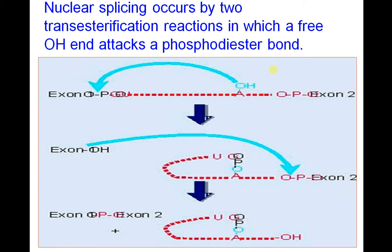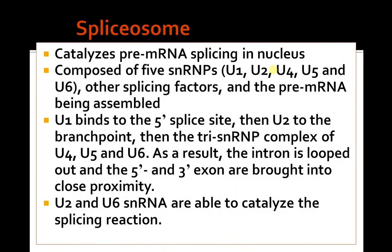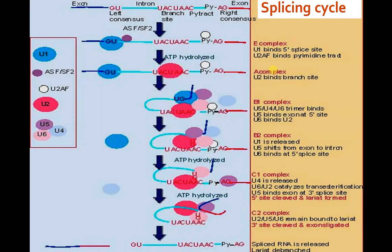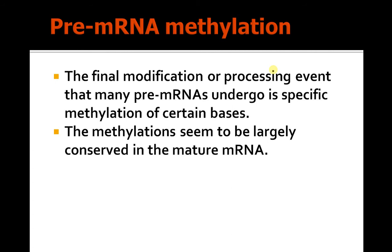Nuclear splicing involves two transesterification reactions in which free hydroxyl ends attack phosphodiester bonds. Spliceosomes catalyze pre-mRNA splicing in the nucleus and are composed of five SNRNPs: U1, U2, U3, U4, and U6. As a result, introns are looped out and the 5' and 3' exons are brought into close proximity.